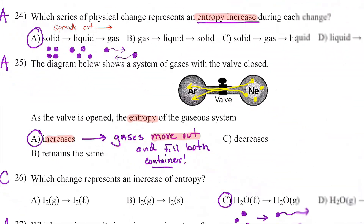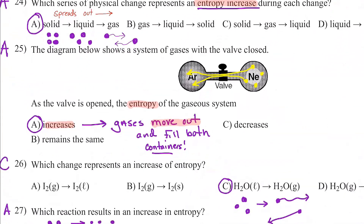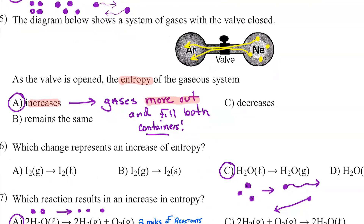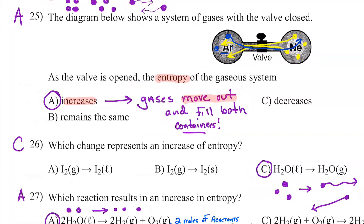Number twenty-five: we have pure argon and pure neon, and when we open the valve these gases spread out into each other's containers — the argon spreads out as well. If they're spreading out, we would say that entropy is increasing. That's as simple as that. 25 is B.